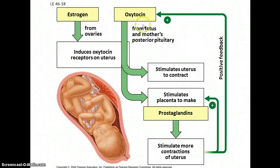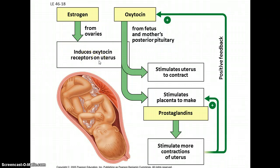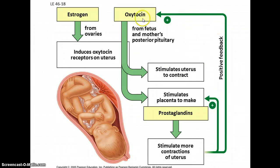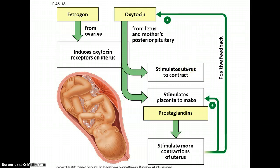A good example of positive feedback occurs during pregnancy. When a baby is ready to come out, it releases oxytocin, which stimulates uterine contractions, and this has positive feedback causing mom to produce more oxytocin. The process builds up and speeds up such that contractions become more intense and more frequent until finally the baby is out, and then the process slows down.